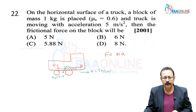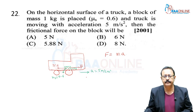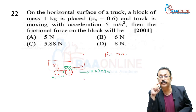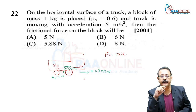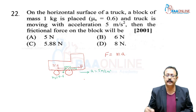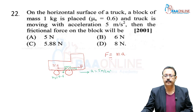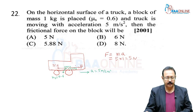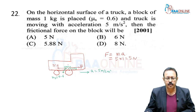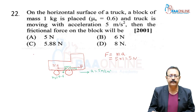Frictional force = M × A = 1 × 5 = 5 newton. So the frictional force on the block is 5 newton. We are going with 5 newton.